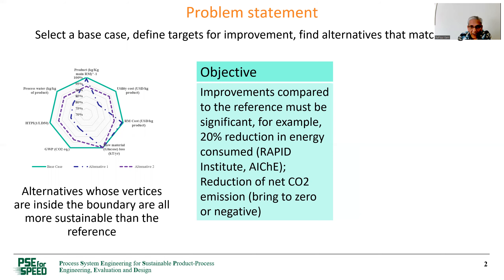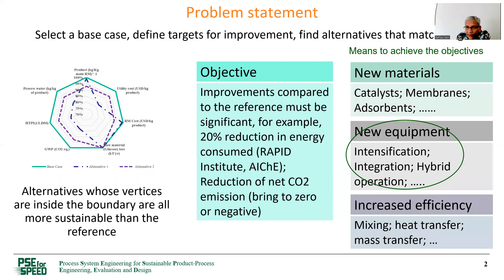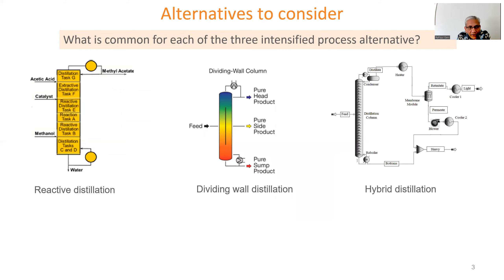The means to achieve these alternatives — there are different ways to get them. What we are concentrating on in this presentation are new equipment, that is intensified equipment, integration, or hybrid operation. The three intensified operations we are going to consider are reactive distillation, dividing wall column, or hybrid distillation.